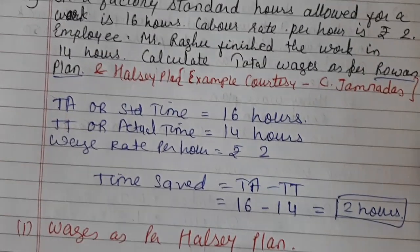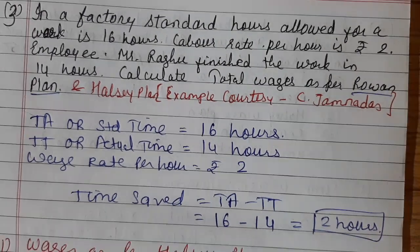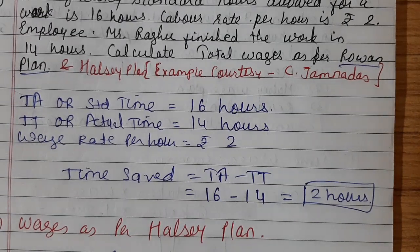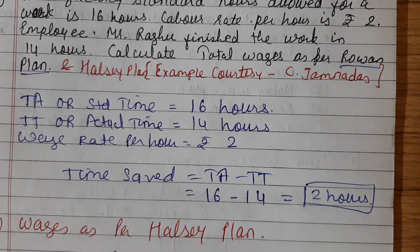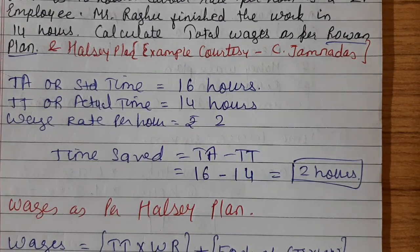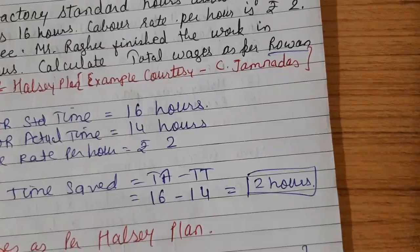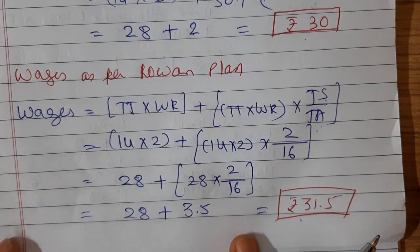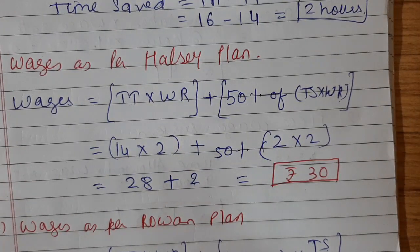Let us read the question once again. In a factory, standard hours allowed for a work is 16 hours, labour rate per hour is rupees 2, and employee Mr. Raghu finished the work in 14 hours. Time allowed is 16 hours, time taken is 14 hours, wage rate is rupees 2, time saved is 2 hours. Wages as per Halsey plan is rupees 30 and wages as per Rowan plan is rupees 31.5. Now let us move towards example number 4, which is a bit lengthier and important.